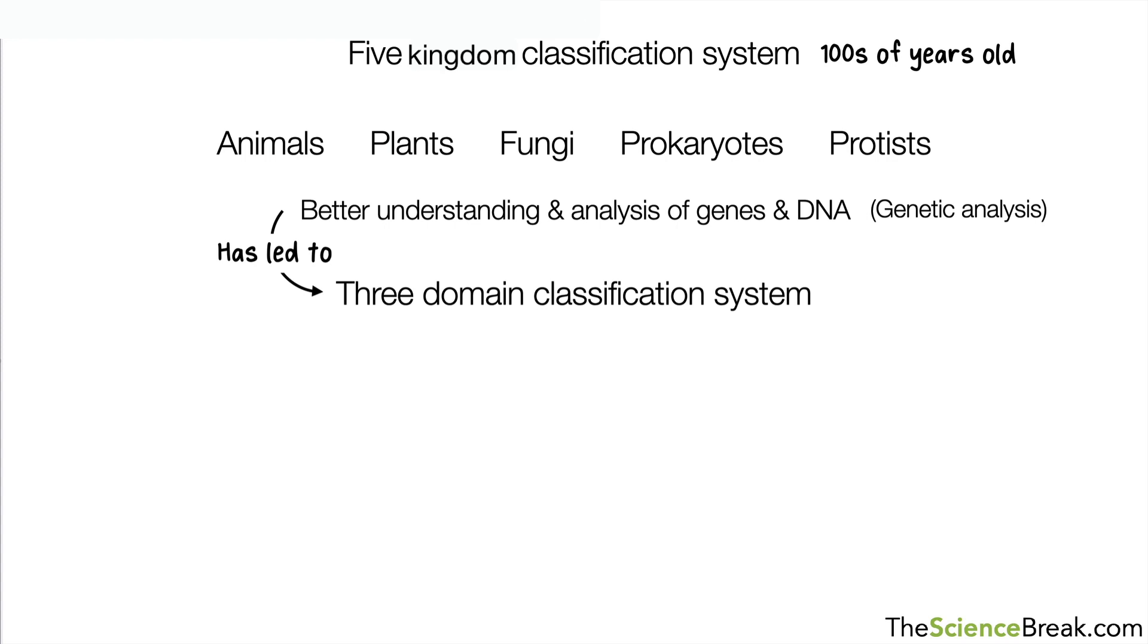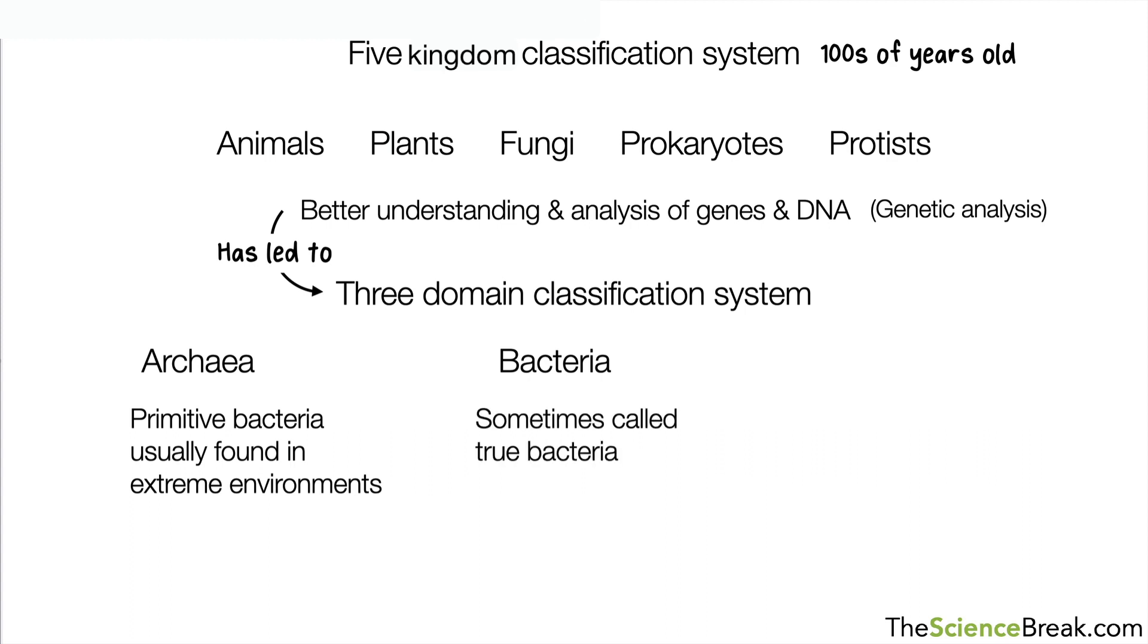One domain is called the archaea. These are primitive bacteria, usually found in extreme environments. Then we have bacteria, sometimes referred to as true bacteria. And then we have the eukaryotes or eukaryota, and this is pretty much everything else: animals, plants, fungi and protists.